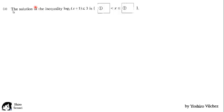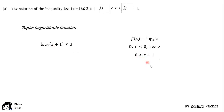Next problem. The solution of the inequality logarithm in base 2 of x plus 1 is less than or equal to 3. So the topic here is logarithmic function. We rewrite the problem here. And we should remember that the domain of logarithmic function is greater than 0. So x plus 1 is greater than 0. Finally x is greater than minus 1.